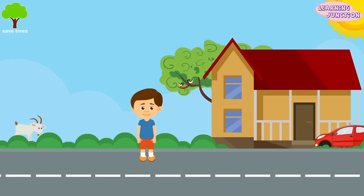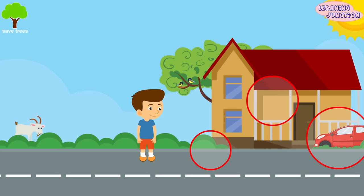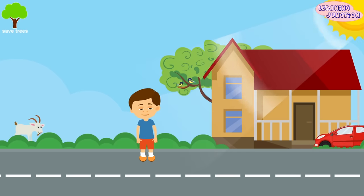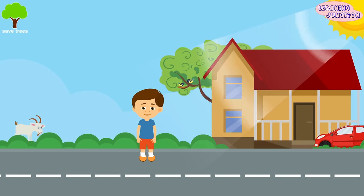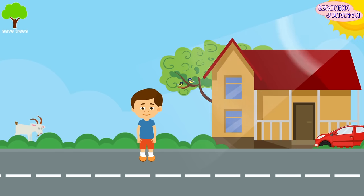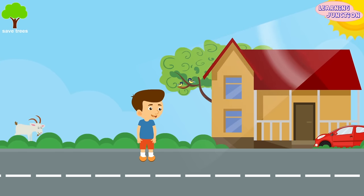On your way to your friend's home, you can see so many things around you. During the day, you get a sufficient amount of light from the sun, which allows you to see the objects clearly.